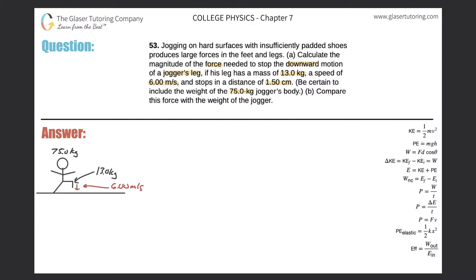Basically, there are two parts to this problem. One has an energy component — there's a speed and there's a mass, so most likely we're dealing with kinetic energy. The other part is just a pure weight-opposing force. So let's look at the work equation on the right-hand side, which says the work done to produce or stop a force equals the force applied multiplied by the distance times the cosine of the angle between the force vector and distance vector.